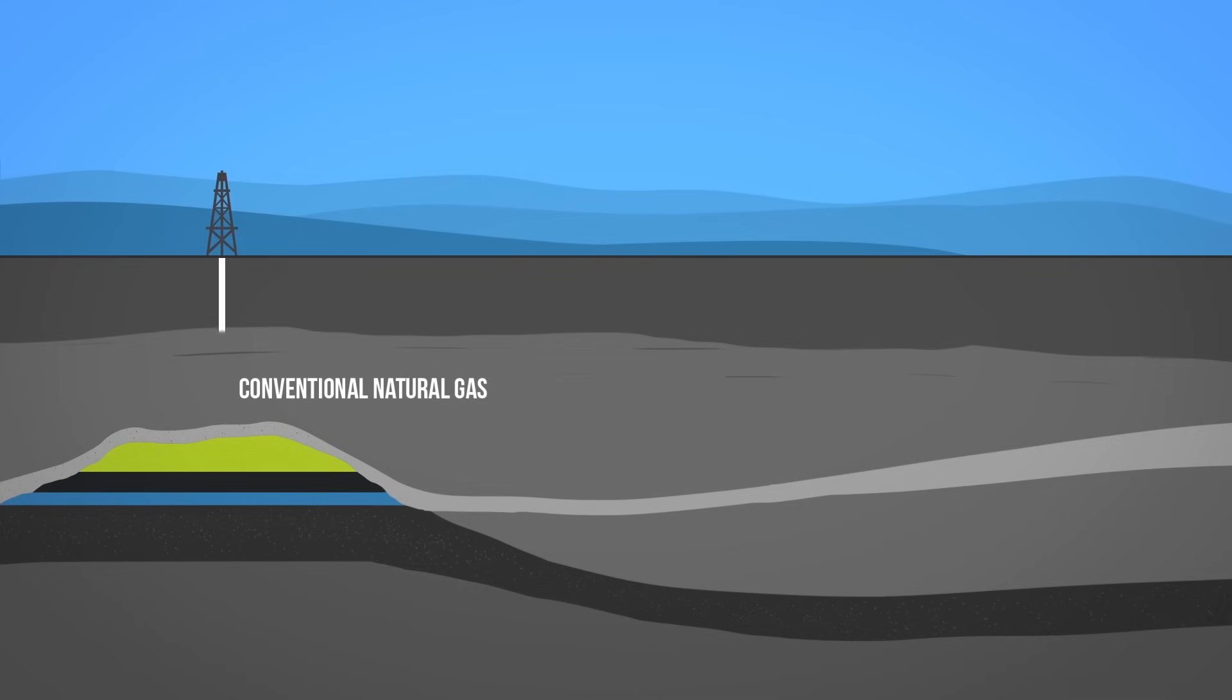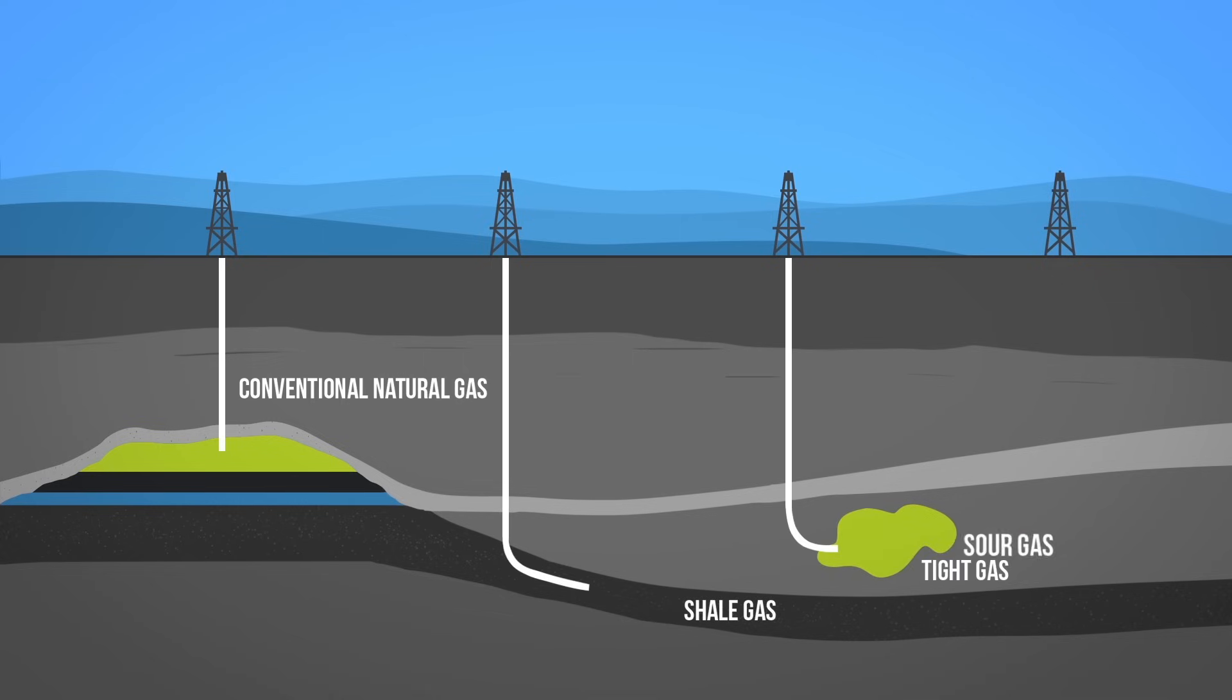Conventional natural gas can be extracted through drilling wells. Unconventional forms of natural gas, like shale gas, tight gas, sour gas, and coal bed methane, have specific extraction techniques.